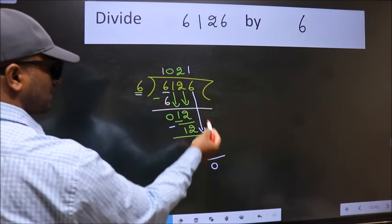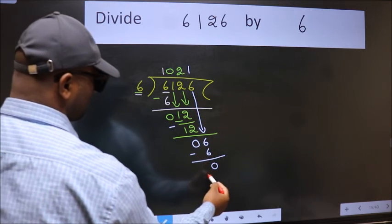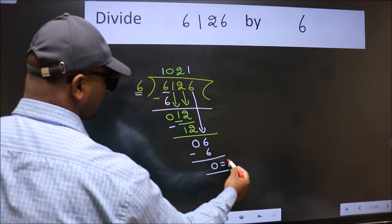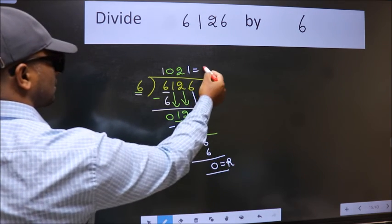No more numbers to bring down, so we stop here. This is our remainder, and this is our quotient.